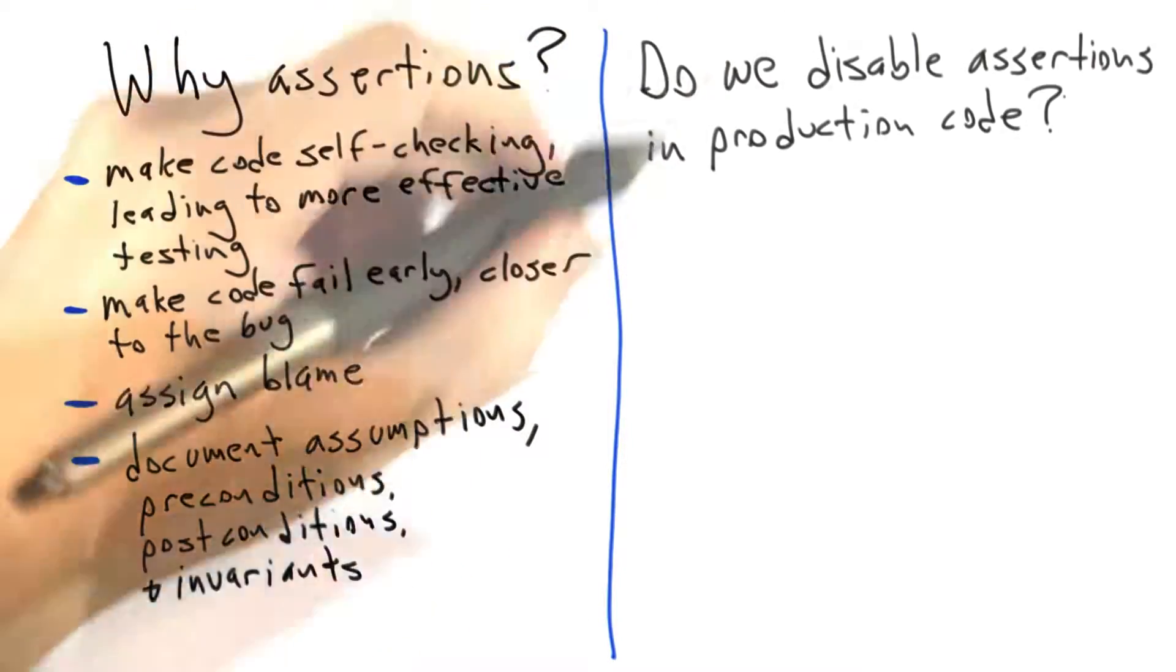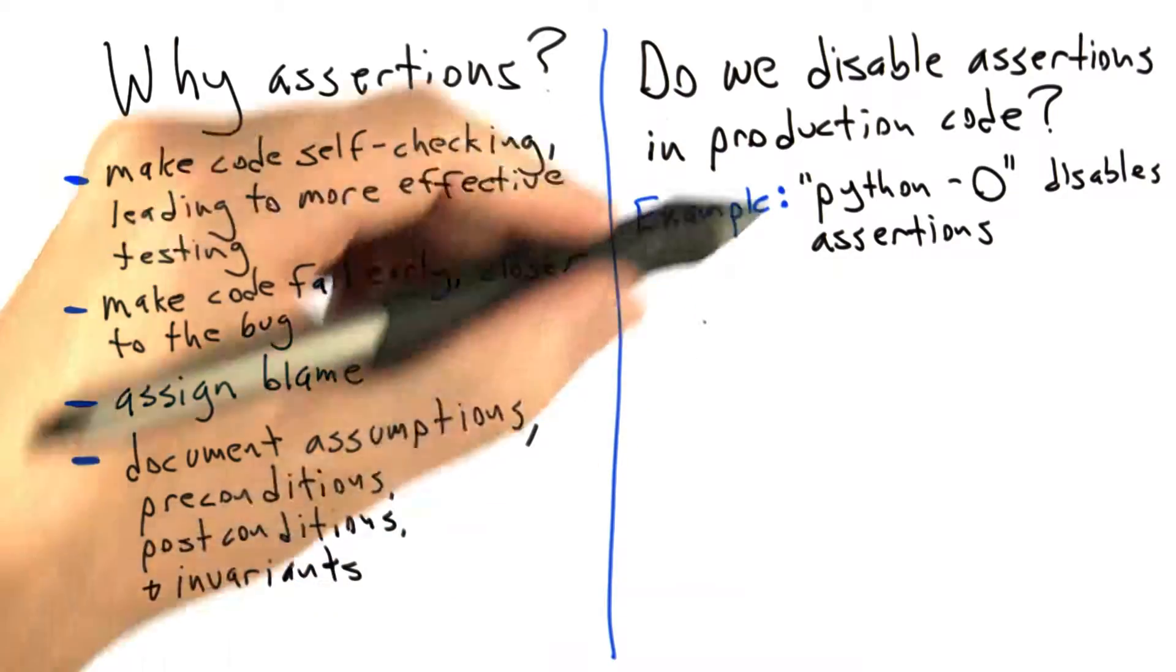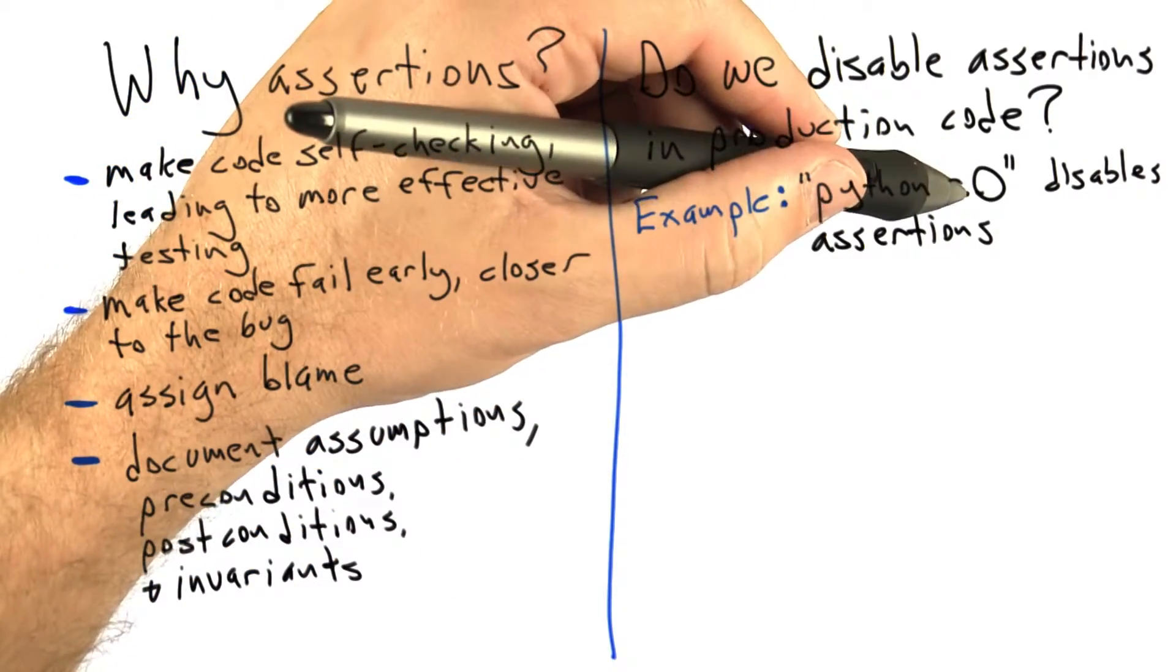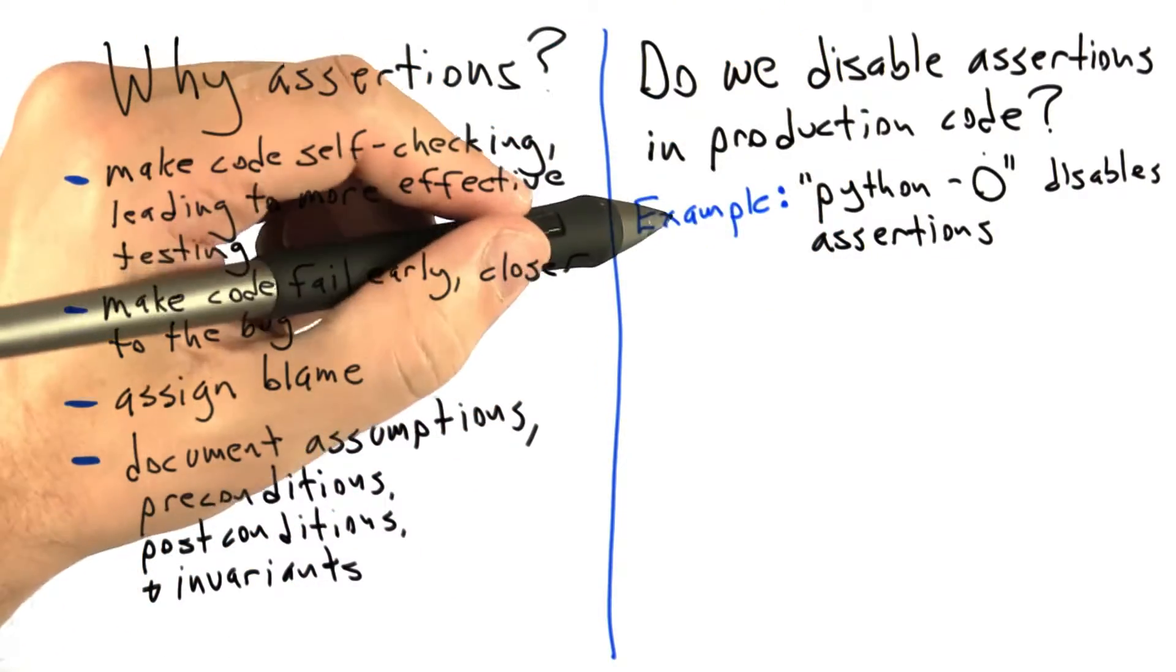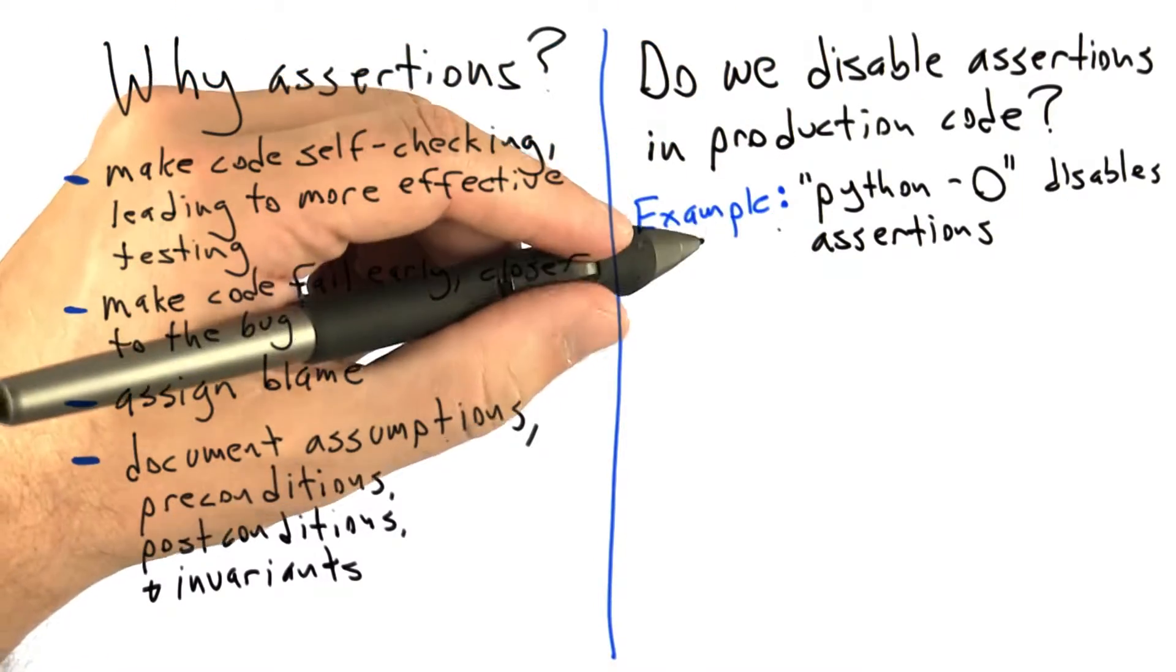So one further issue I want to talk about is, do we disable assertions in production code? For example, when we run the Python interpreter with the dash O option, which causes Python to enable some optimizations, it disables assertions in order to make our code run faster.